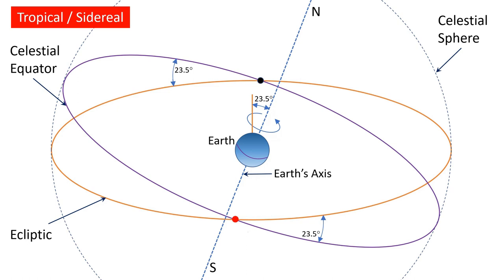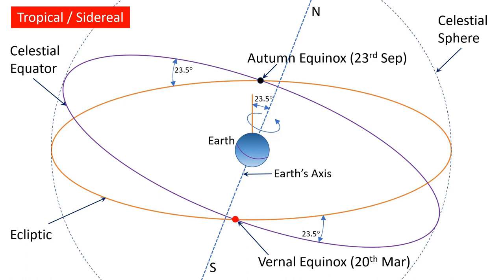When the Sun is passing from the southern hemisphere to the northern hemisphere, it cuts the equator in March, and that is called the vernal equinox or spring equinox. And when the Sun is passing from the northern hemisphere to the southern hemisphere, it cuts the equator in September, and this is called the autumnal or fall equinox by people in the northern hemisphere. These two points are shown on the screen. On the dates of these two equinoxes, the days and the nights are approximately of equal duration all over the planet.